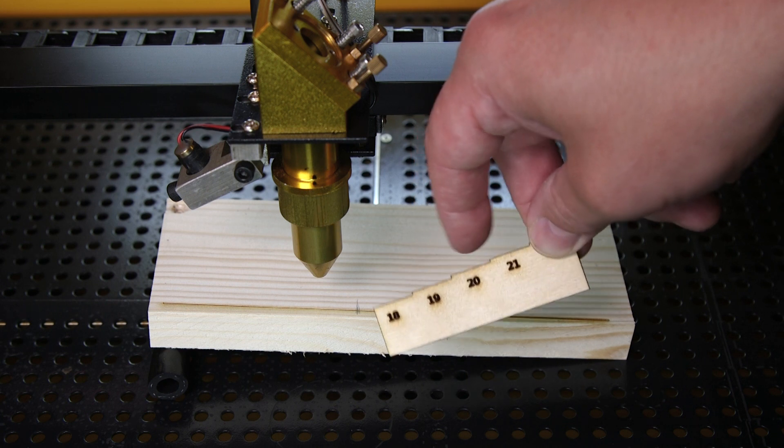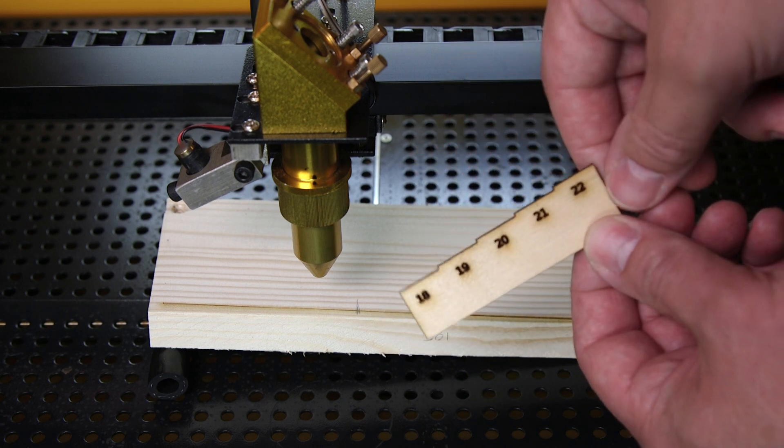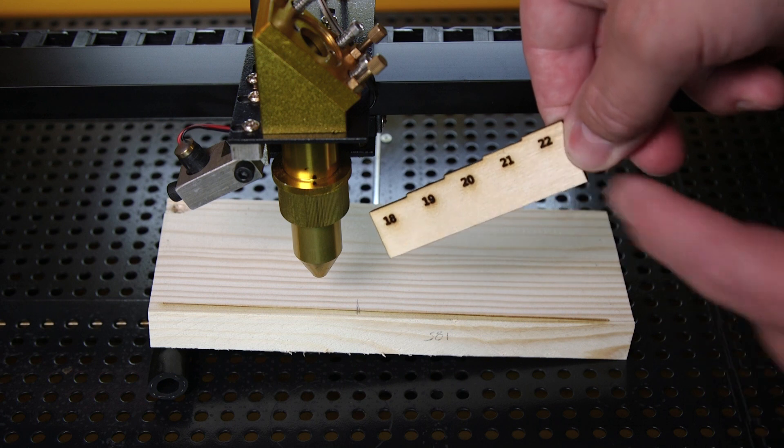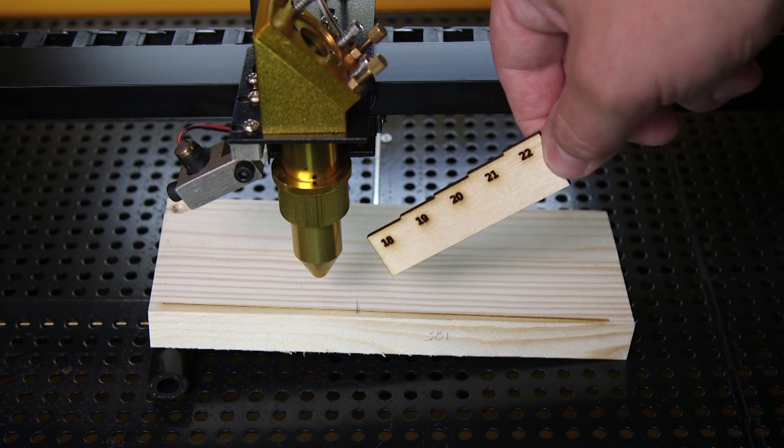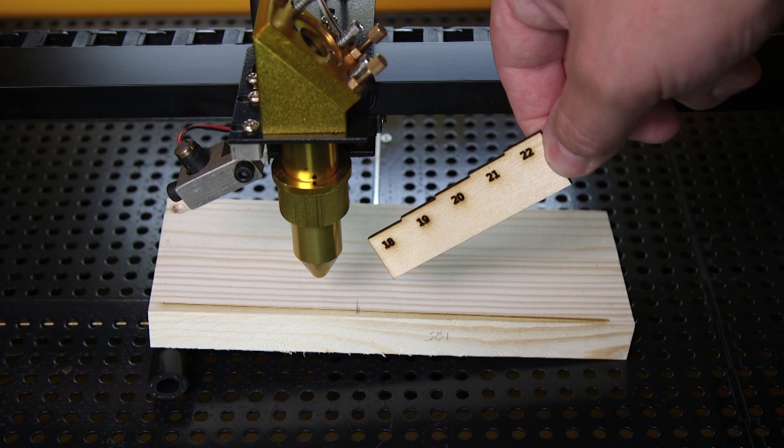Now when you're engraving, sometimes you may want to actually blur the engraving line a little bit. So this is when I would set it to 21 or 22 to kind of give a blur effect, so everything isn't so crisp on the engraving.